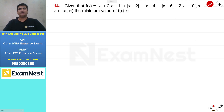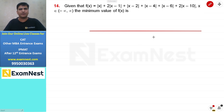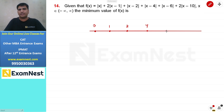Next question: given f(x) = |x| + 2|x−1| + |x−2| + |x−4| + |x−6| + 2|x−10|, where x ranges from minus infinity to infinity, find the minimum value of f(x). This is a standard question asked even last year with slightly different data. The approach is: on the number line, set each expression inside the modulus equal to zero, giving x values of 0, 1, 2, 4, 6, and 10.